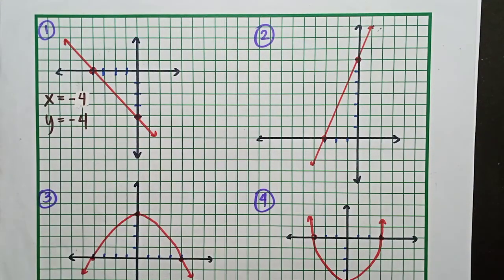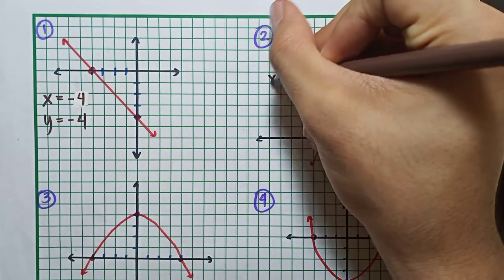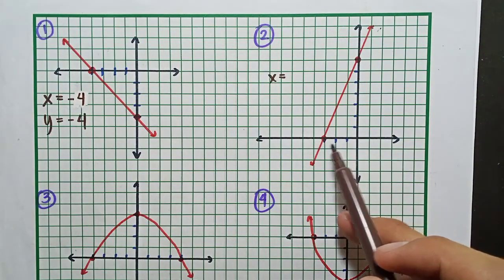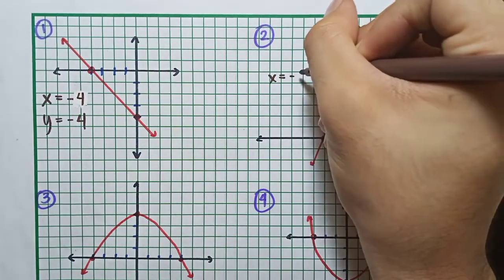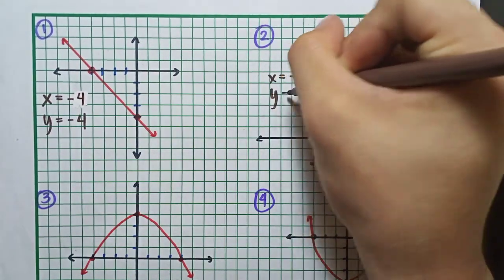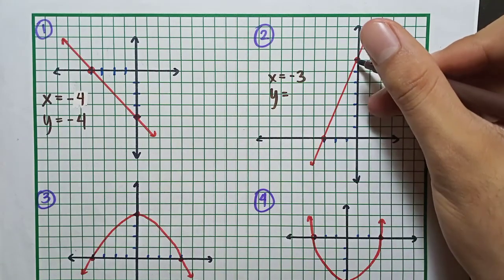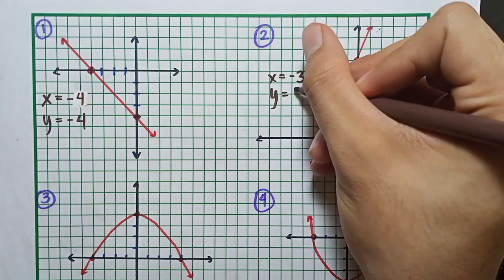Next, number 2. Where is the x-intercept? It's at negative 1, negative 2, negative 3. And for the y-axis, where does it hit? 1, 2, 3, 4, 5, 6, 7. Here. Y equals 7.